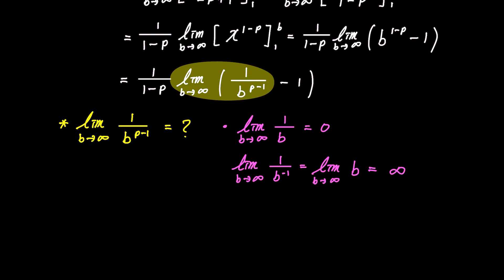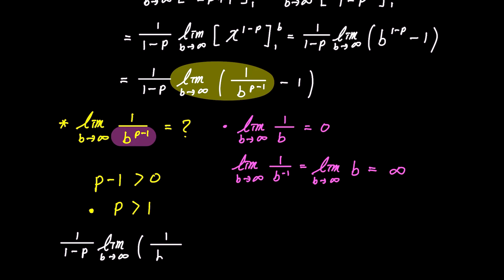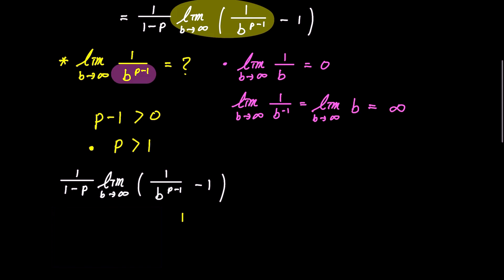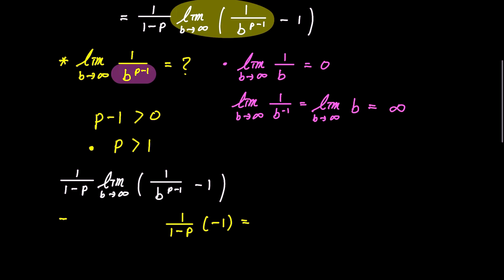In the end, for the expression to converge, the exponent of b in the denominator, which is p minus 1, must be positive. In other words, for convergence, p must be greater than 1. Therefore, 1 over 1 minus p times the limit of 1 over b to the power of p minus 1, minus 1, as b approaches infinity, becomes 1 over 1 minus p times negative 1, ultimately simplifying to 1 over p minus 1. However, when p is less than or equal to 1, it diverges.